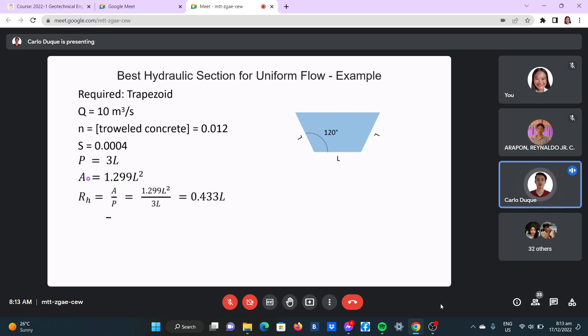Therefore we can get the hydraulic radius, A over P, which is 1.299 L squared over 3L. So to have the best hydraulic section, you will have an Rh of 0.43L. Therefore using the discharge equation, Manning's number, 1 over N times area times Rh to the two-thirds times S to the one-half. So plug in using 10 cubic meter given, 1 over 0.012 times 1.299 in terms of L times 0.43 in terms of L times the slope.